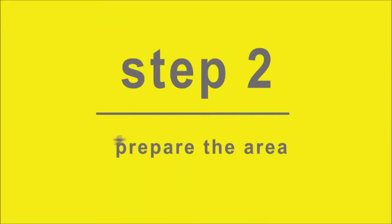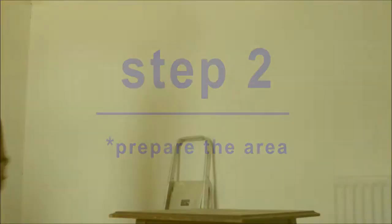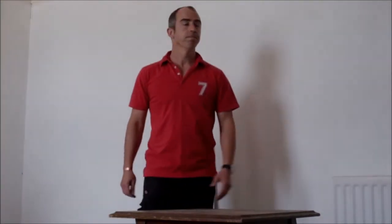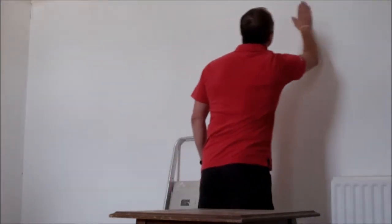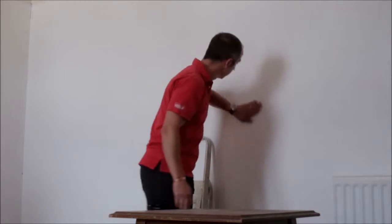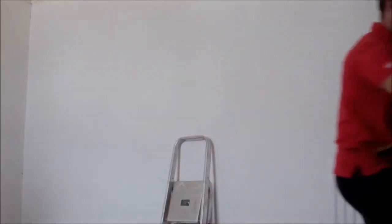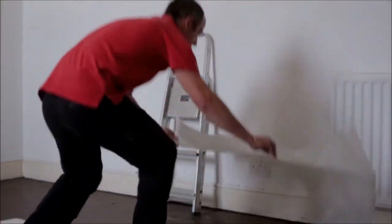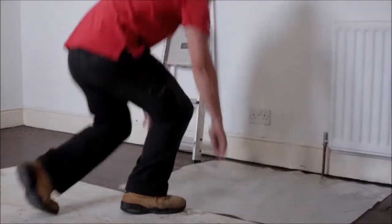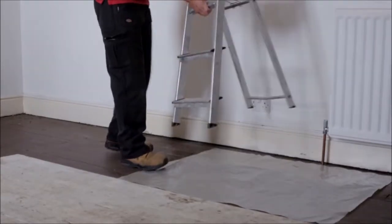Step 2. Prepare the area. Decide where you are going to take your sample from. It may help to sample from a partially damaged area, edge, or joint. Clear the area below where you are taking the sample from of any furniture or obstructions. Place the polythene sheet on the floor and ask anybody else to leave the room during the sample exercise.